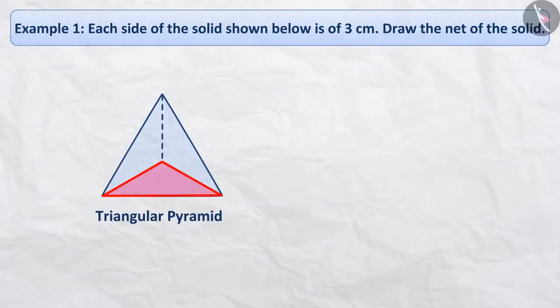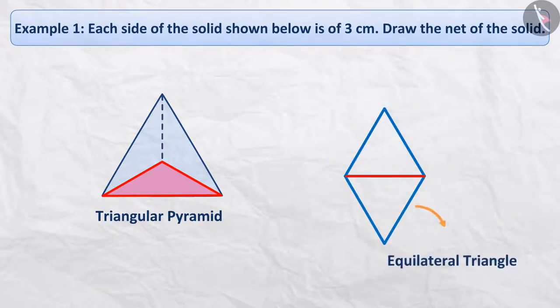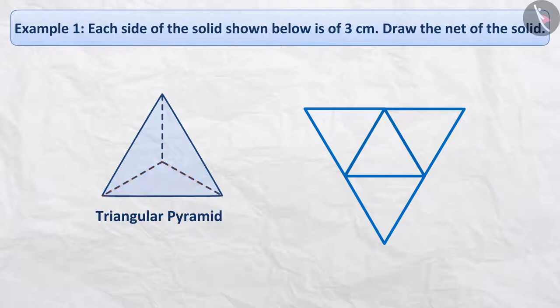To draw a net, we will first draw a triangular base with all sides equal. Now, we will draw an equilateral triangle on one side of this triangle whose side is equal to the side of the base. Similarly, we will draw the triangle of the measure of the base on the remaining two sides. In this way, we have drawn the net for the triangular pyramid.